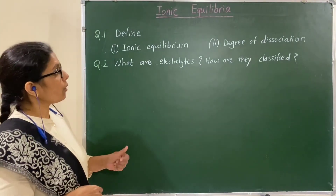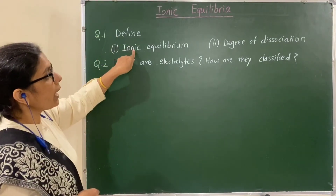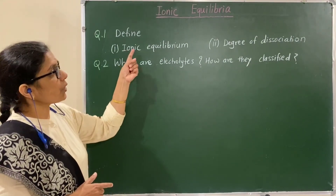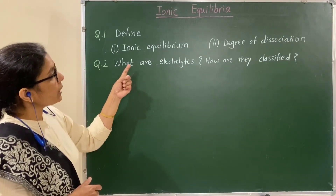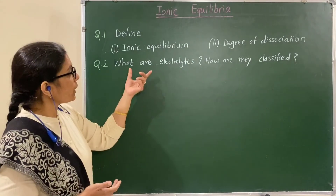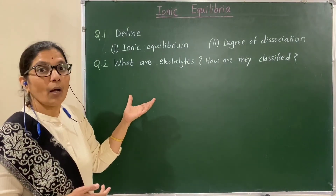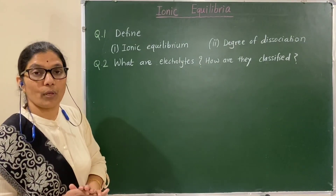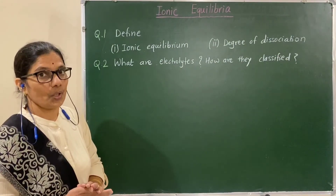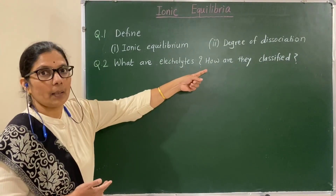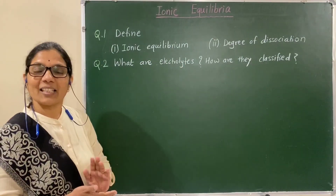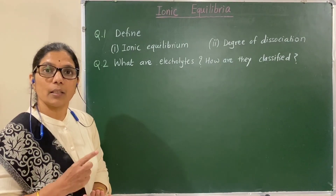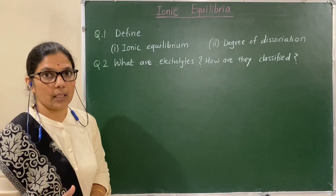The exam questions based on this part include: define ionic equilibrium and degree of dissociation — each definition carries one mark; and what are electrolytes, how are they classified, with examples of strong and weak electrolytes. In the next session, we will learn the different theories to explain acids and bases.